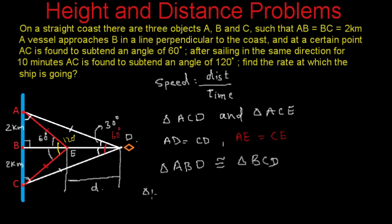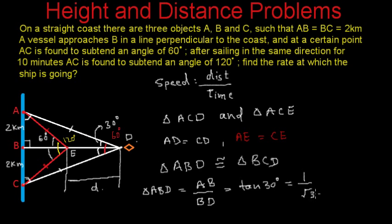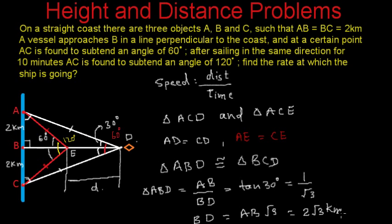In triangle ABD, AB divided by BD equals tan 30 degrees, and tan 30 degrees equals 1 by root 3. Since AB equals 2 kilometers, we get BD equals AB times root 3, which is equal to 2 root 3 kilometers.